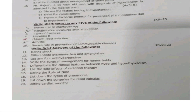Continuing brief answers: 19th — list down the surgeries for renal calculus; 20th — define cardiac monitor. Each brief answer carries 2 marks, 10 × 2 = 20 marks, bringing the total to 75 marks.